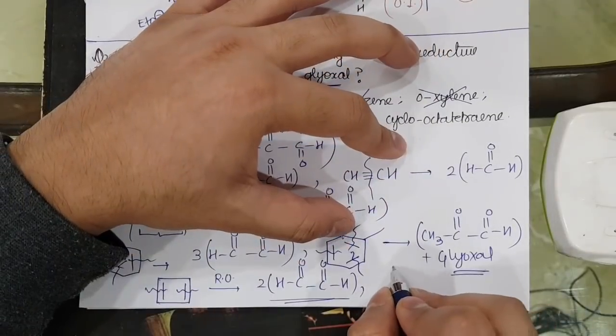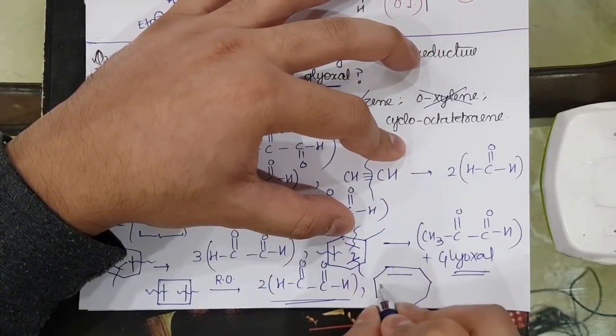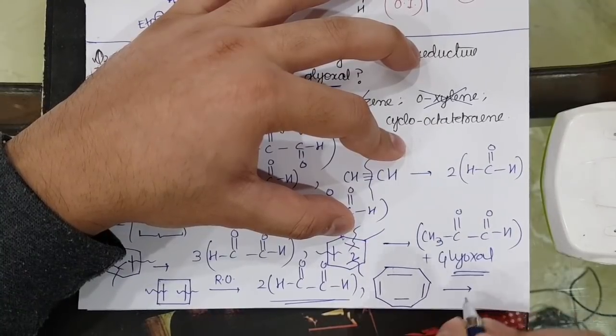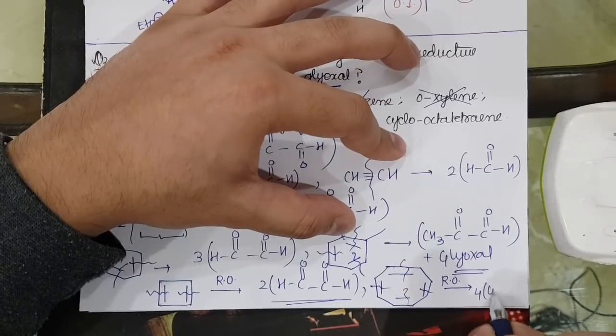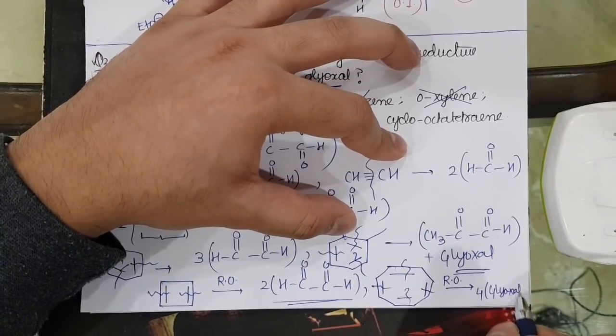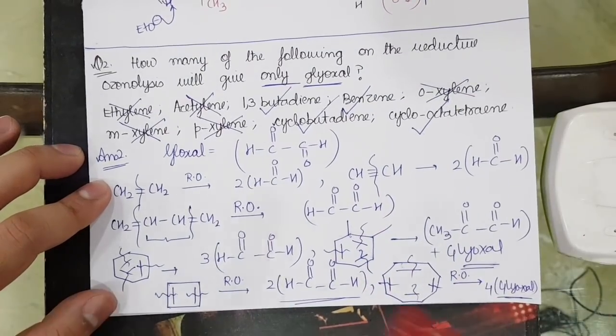And cyclooctatetraene, what is cyclooctatetraene? That is basically this very popular structure from the aromatic compounds. If I do reductive ozonolysis, what will I get? I will get the formation of 4 moles of glyoxal. 4 moles will form.